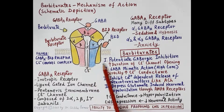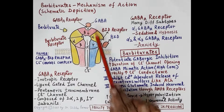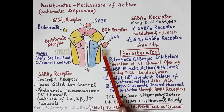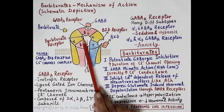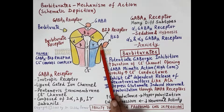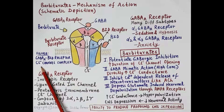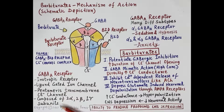The GABA-A receptor possesses an active site for GABA. Apart from that, there are allosteric binding sites: a barbiturate receptor binding site and a benzodiazepine receptor binding site. Therefore, this GABA-A receptor is termed the GABA-A benzodiazepine receptor chloride channel complex.